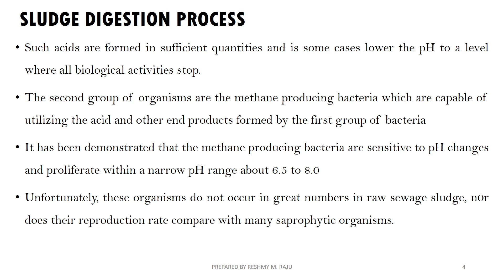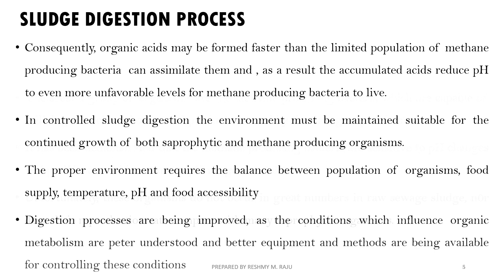The second group of organisms is methane-producing bacteria. When the first group converts acids, the second group — methane-producing bacteria — utilizes them. Comparing these bacteria, the reproduction rate is very important. If there is a good amount of organic acids and no methane bacteria, there is a drastic reduction of pH.